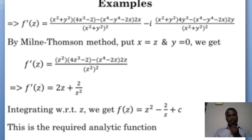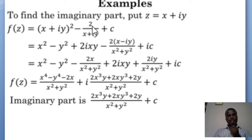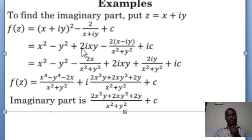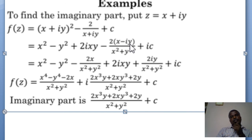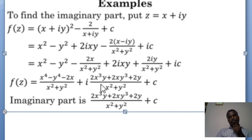To find the imaginary part, put z = x + iy. So f(z) = (x + iy)² − 2/(x + iy) + c. Expanding (x + iy)² gives x² − y² + 2ixy. For 2/(x + iy), we rationalize by multiplying numerator and denominator by (x − iy), giving 2(x − iy)/(x² + y²). Separating real and imaginary parts, the real part is (x⁴ − y⁴ − 2x)/(x² + y²) and the imaginary part is (2x³y + 2xy³ + 2y)/(x² + y²) + c. These are very important problems on construction of analytic functions when the real part is given.